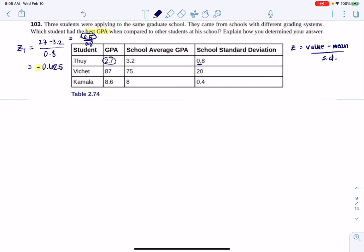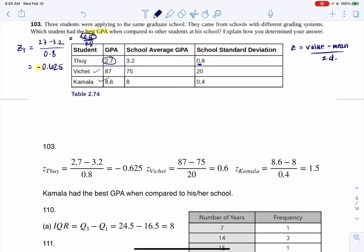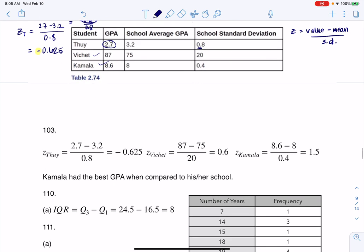All right, now I'm going to show you the rest for Vichay and Kamala. Let me get rid of this right here. All right, so you can actually see all of the GPAs. So there's Thuy, there's Vichay, and there's Kamala.